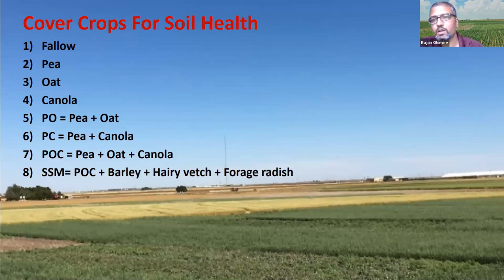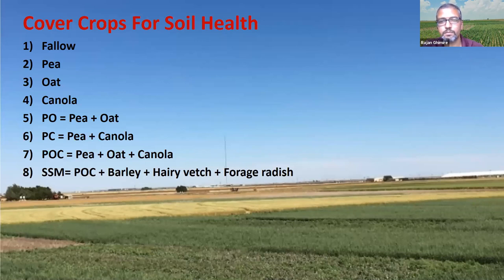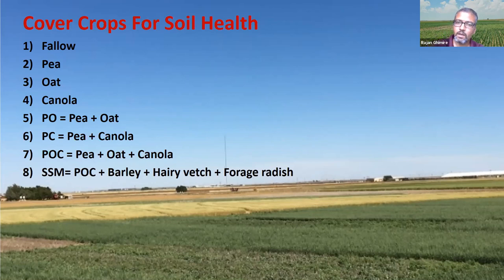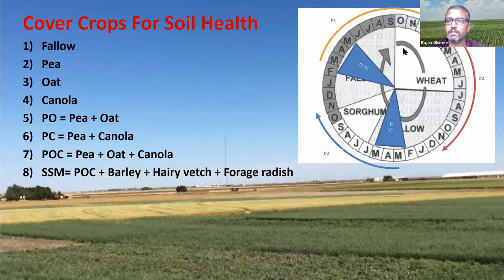What I will basically be talking about today is a cover crop study I started in fall 2015 with eight different cover crop treatments. I planted pea, oat, and canola as single-species cover crops representing legume, grass-type, and brassica cover crops. We also did a mixture of pea and oat, pea and canola, pea plus oat plus canola, and then a diversity mix — a six-species mixture of pea, oat, canola, barley, hairy vetch, and forage radish.